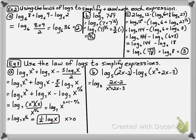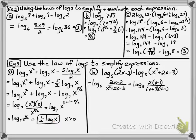In our last one, we have log base 5 of 2x minus 2 minus log base 5 of x squared plus 2x minus 3. The first thing we can do is divide them and put them on top of each other. Now we can factor those two expressions to get log base 5 of 2 times (x minus 1) over (x plus 3)(x minus 1). We cancel the (x minus 1) factors and are left with log base 5 of 2 over (x plus 3).